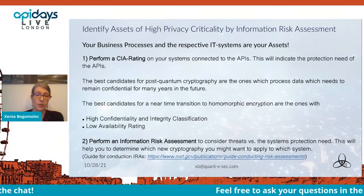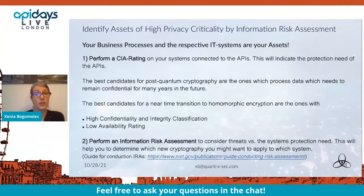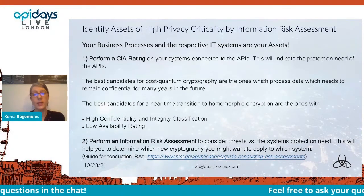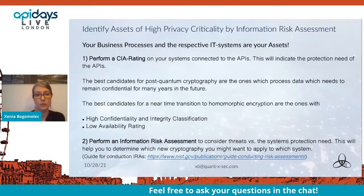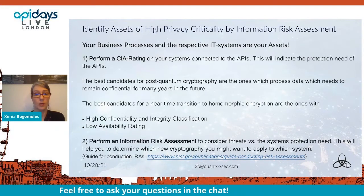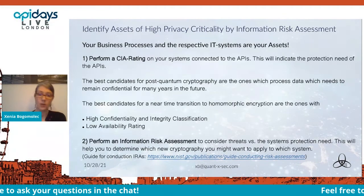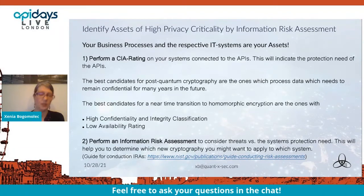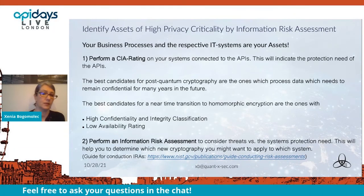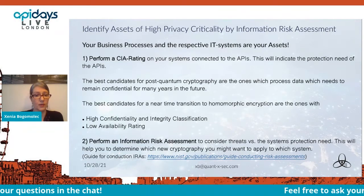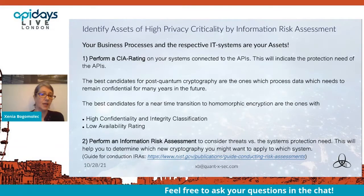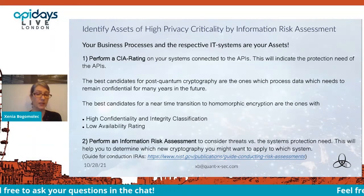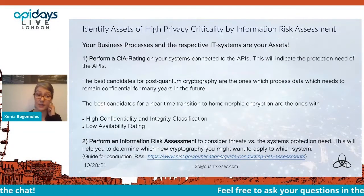The best candidates for post-quantum cryptography are the ones which process data that needs to remain confidential for many years. Even if it takes another ten years until quantum computers are a real threat, data collectors are already gathering data now, waiting for the moment they can decrypt it with a quantum computer. The best candidates for near-term transition to homomorphic encryption are those with high confidentiality and integrity classification but low availability rating — because those algorithms are still slow.